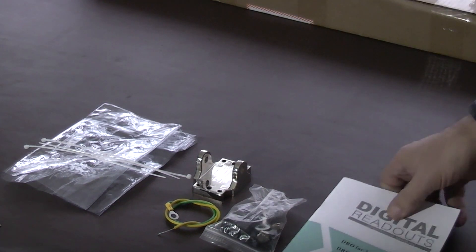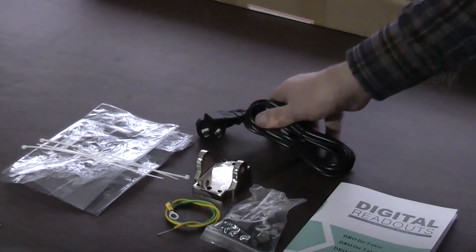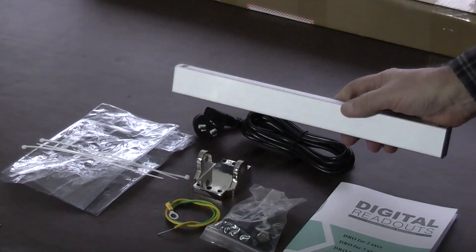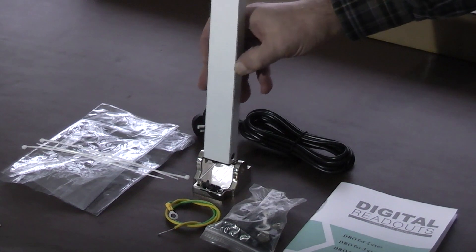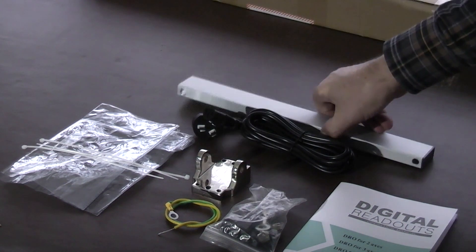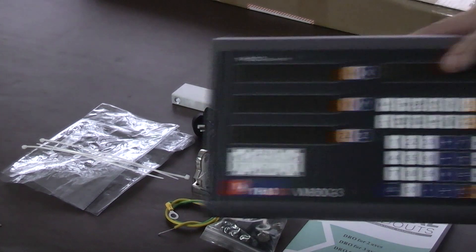There's a bag of nuts and bolts, the manual, power cable, the tube that holds the display to the bracket, and of course the display itself.